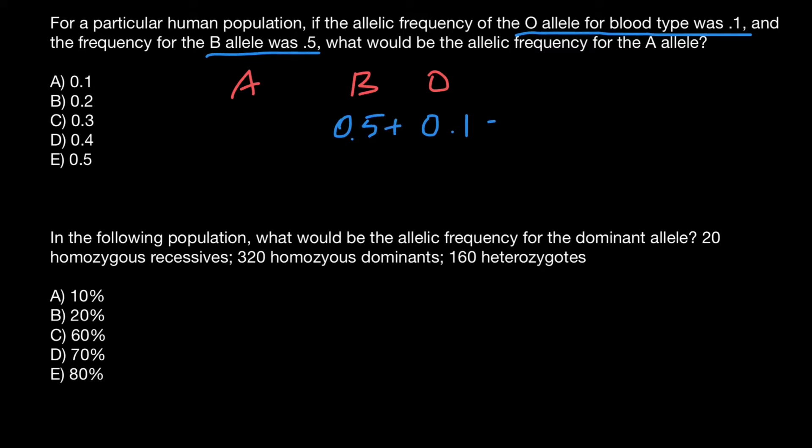And we know that frequency of the three alleles equals 100% or 1. So 0.5 plus 0.1 is going to be 0.6, and this gives us frequency of the A allele is 0.4. And this is answer D.